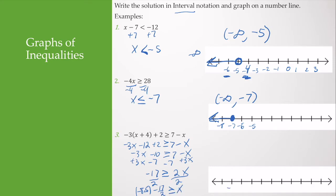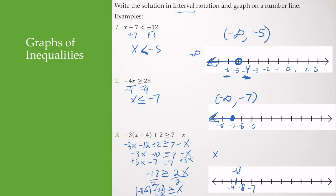On the number line I mark negative 9, negative 8, negative 7. Negative 17 halves, which is negative 8 and a half, is included. Rewriting, x is less than or equal to negative 17 halves, so I shade to the left. The interval notation is from negative infinity to negative 17 halves.